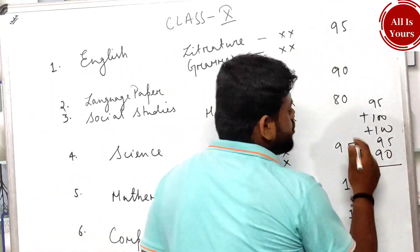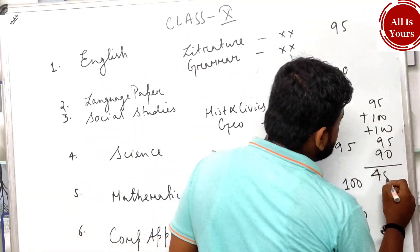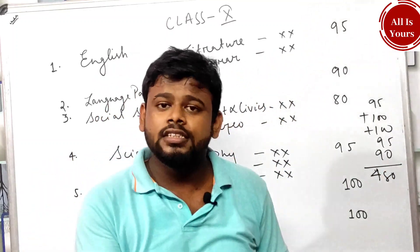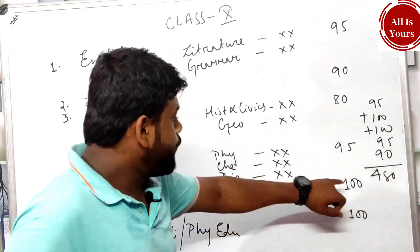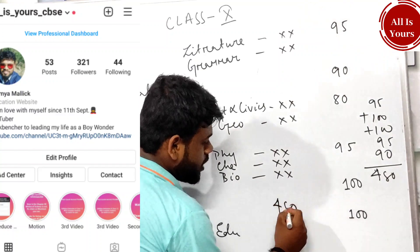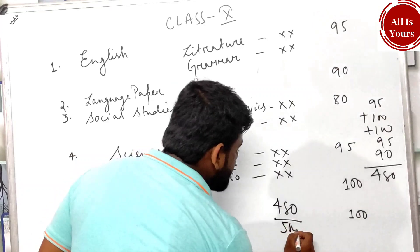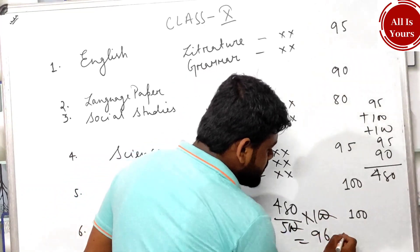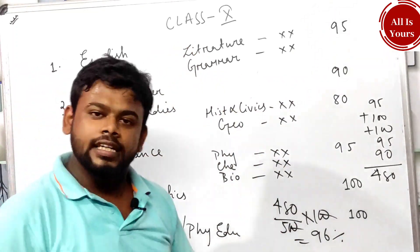Adding all five: 95 + 100 + 100 + 95 + 90 = 480. The total marks for five subjects is 500. So 480 divided by 500 multiplied by 100 equals 96%. That means this student secured 96 percent.